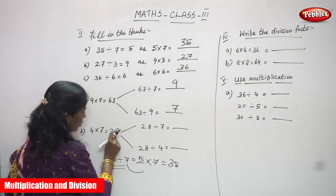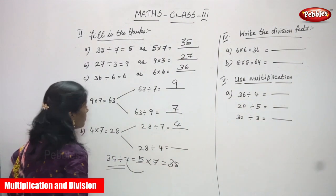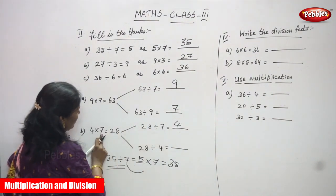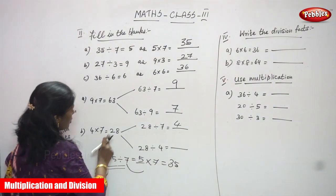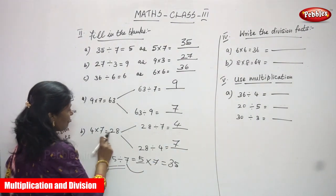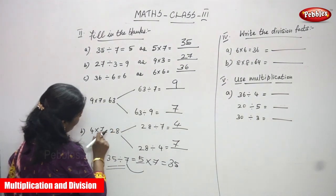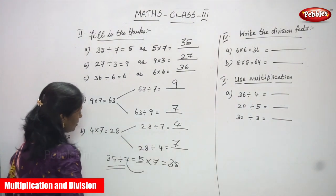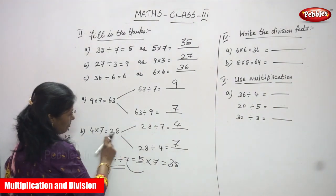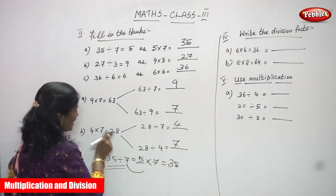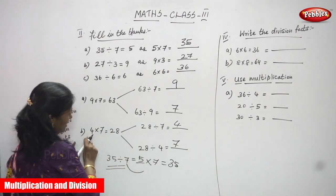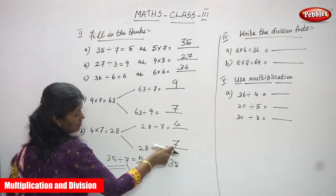Second sum: 4 into 7 is 28. Now 28 is divided by 7 — the remaining number you must write is 4. And 28 is divided by 4 — the answer is 7. So 4 into 7 is 28 as clearly given. 28 divided by 7: the remaining number is 4, write it in the blank. 28 divided by 4: the next remaining number is 7, write it in the blank.